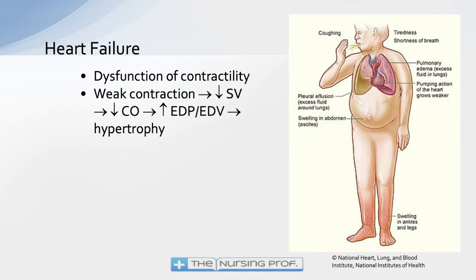The weak contraction causes a decrease in stroke volume, which decreases cardiac output and causes an increase in end diastolic pressure and volume. Too much fluid backs up from the heart. From the left side it backs up into the lungs; from the right side it backs up into the periphery. That's important to know — they will ask you questions about the difference. This increased end diastolic pressure and volume will cause the heart to start to hypertrophy.